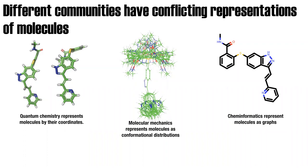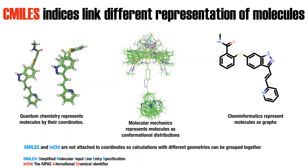It turns out that cheminformatics syntax works really well for combining these different representations of molecules. The very popular ones are SMILES and InChI. SMILES stands for Simplified Molecular Input Line Entry Specification — it's basically a syntax for representing the graph of the molecule. InChI is from IUPAC — the IUPAC International Chemical Identifier — a standardized way of representing molecules.